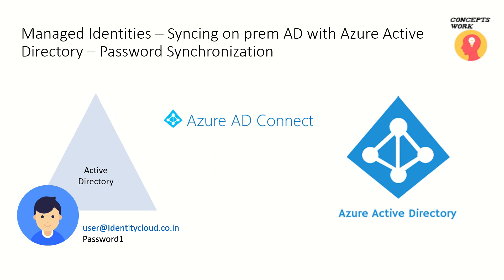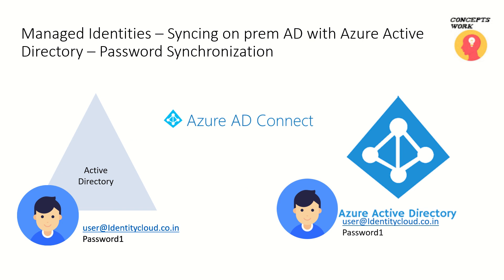The next scenario is syncing identities using password synchronization. When you install Azure AD Connect, you get the option to synchronize passwords to Azure Active Directory. The exact identity of your user account is synced to Azure AD via Azure AD Connect. For example, an organization using identitycloud.co.in with password sync — when the same user logs into portal.office.com or portal.azure.com, they can use the same username and password they use to access on-premises resources.